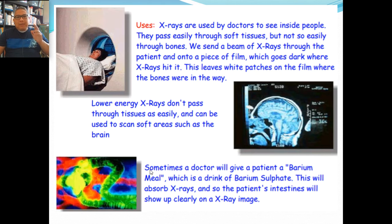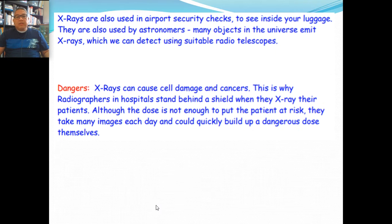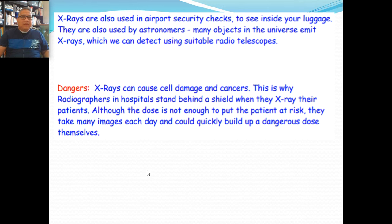I'm hoping you're getting this. If you have questions, just email me. Uses of X-rays — obviously it's used for looking at bone structures. They use film, and when the X-ray hits the film it creates an image. Patches of the film where bones were in the way will show the bones. If you have a crack, it will appear dark. Sometimes a doctor will give a patient a barium meal — a drink of barium sulfate — which absorbs X-rays and shows up clearly on an X-ray image. X-rays can cause cell damage and cancer, so you're only allowed limited X-rays per year. That's why when you go to the hospital there's a sign — if the light is on, the X-ray is on, so you don't just enter.